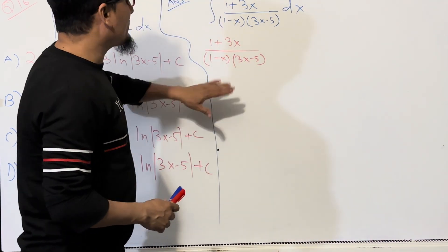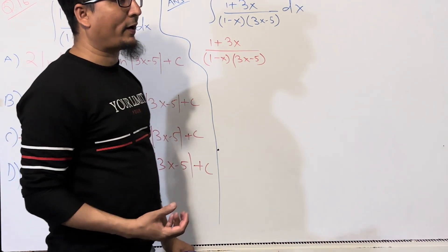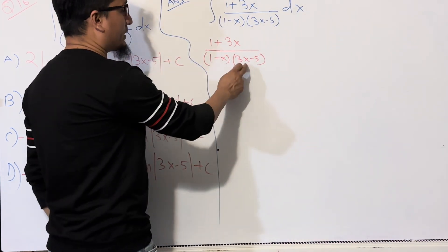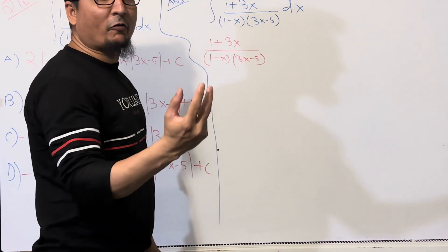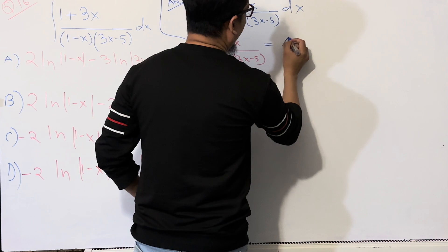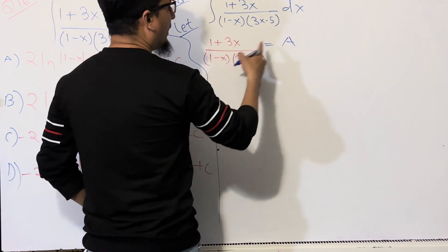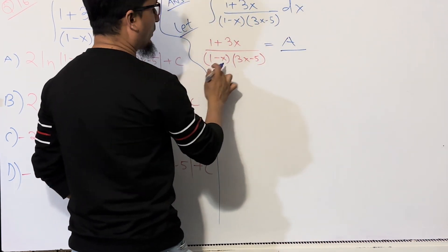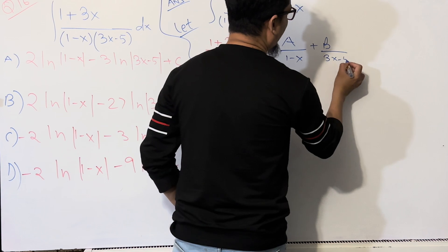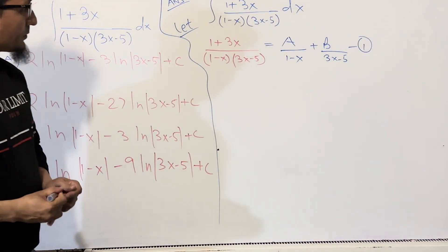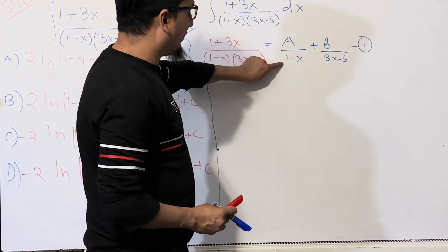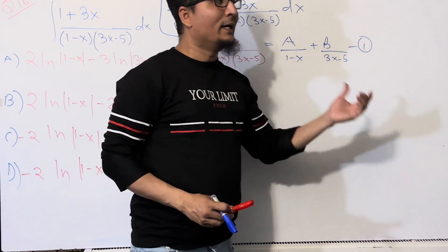The concept of partial fractions has three cases. Case number one: if you have a fraction whose denominator contains two different linear factors, you write it as A divided by the first linear factor plus B divided by the second linear factor. So: (1 + 3x) / [(1 - x)(3x - 5)] = A/(1 - x) + B/(3x - 5).